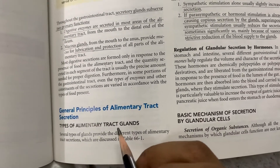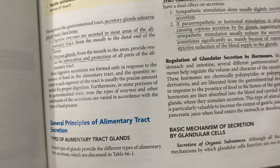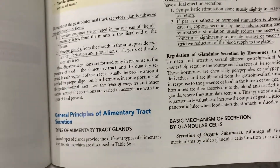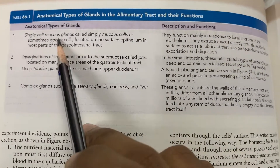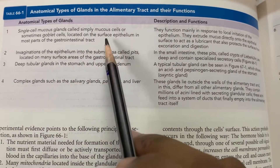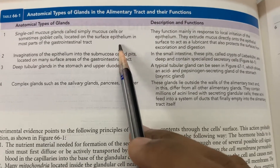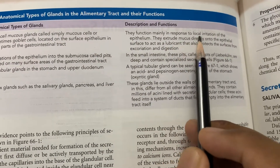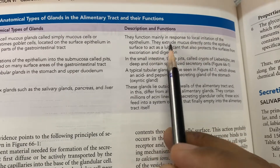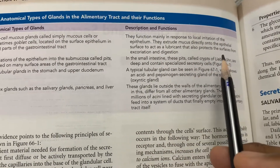Coming to the types of alimentary tract glands, we have different anatomical types. We have single-celled mucous glands, also called goblet cells or mucous cells. They are located on the surface epithelium of the GIT.